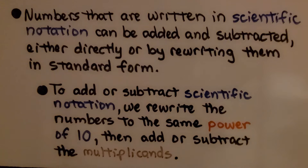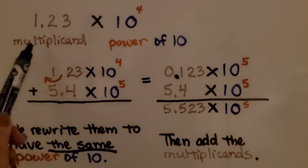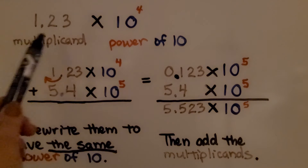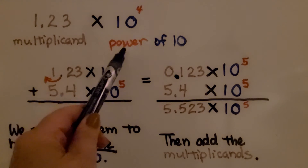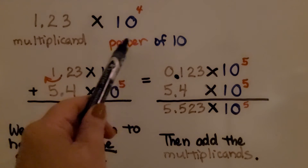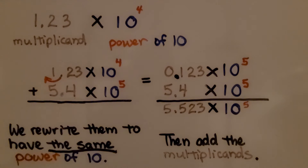To add or subtract scientific notation, we rewrite the numbers to the same power of 10, then add or subtract the multiplicands. The first number in a multiplication problem is the multiplicand — we're multiplying it by the power of 10, in this case 10 to the fourth power.